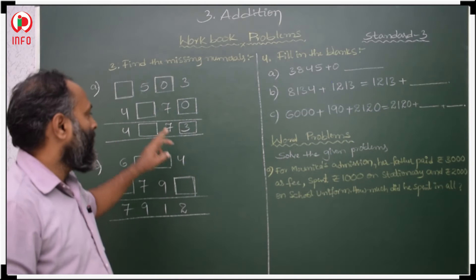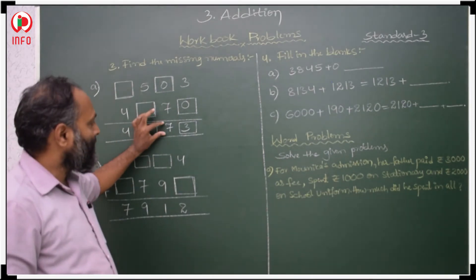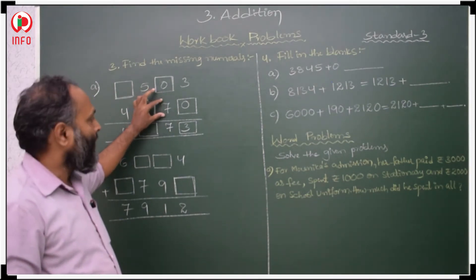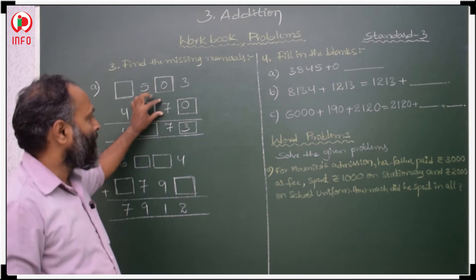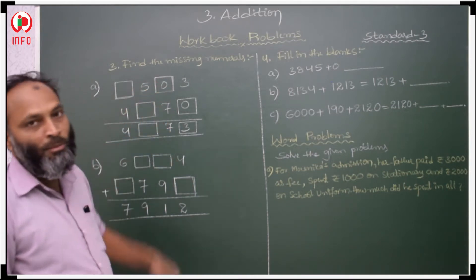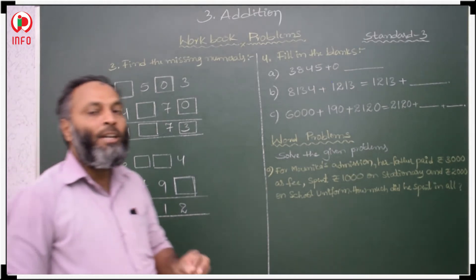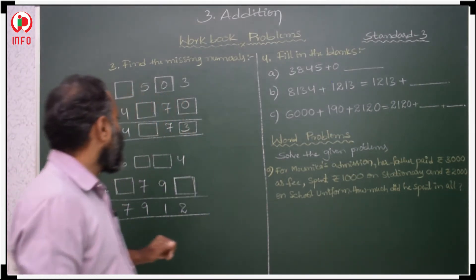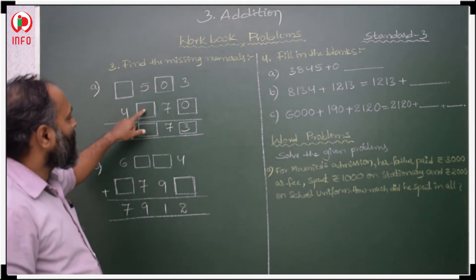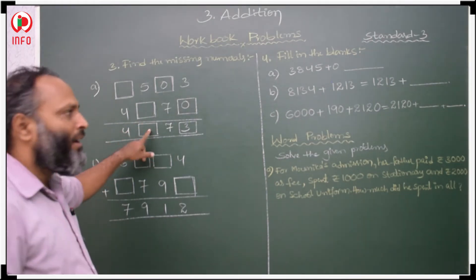So it is correct. Here it is a sum, this is the addend. Addend and sum both are the same. If both are the same, then the other addend should be 0. Then in the same case, 1 should come here.